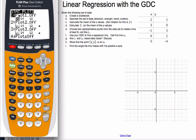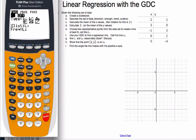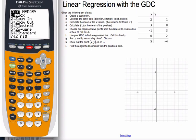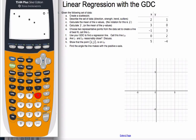To make the scatterplot I go to 2nd Y= which is STAT PLOT. I turn on Plot 1 by hitting ENTER to make it bold, selecting the scatterplot type, setting X list to L1 and Y list to L2. Then I go ZOOM 9 for a nice zoom-fit window, and there's my scatterplot.